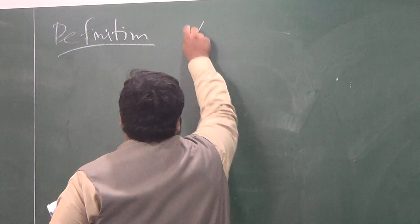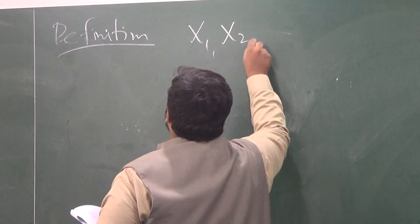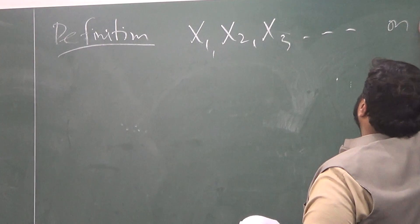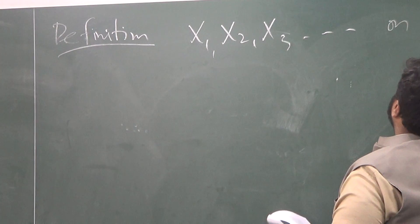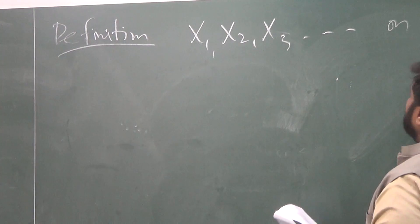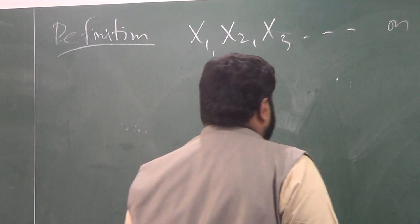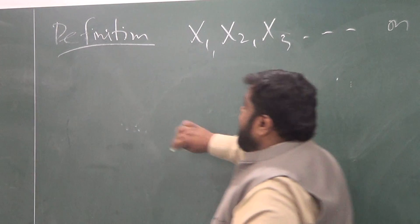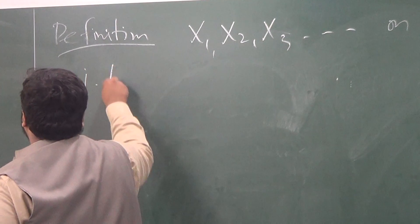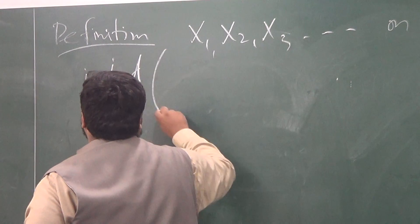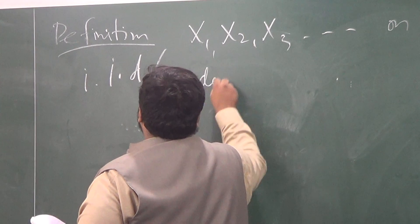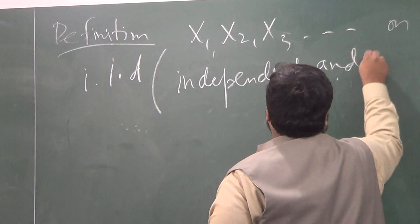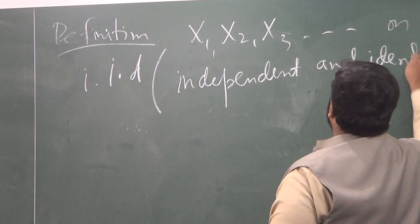Imagine you have a sequence of random variables on the probability space. We call this sequence of random variables IIDs — independent and identically distributed.